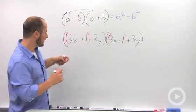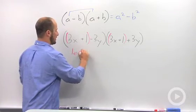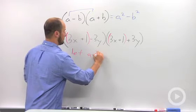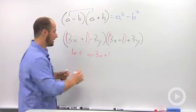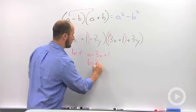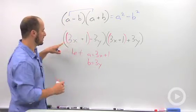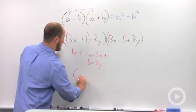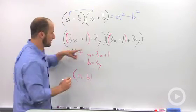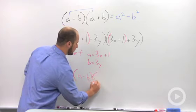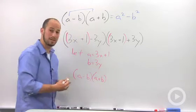So, what we can do is if we say let a equal 3x plus 1 and let b equal 3y, what we've actually done is turn this equation into a minus b and this equation into a plus b.